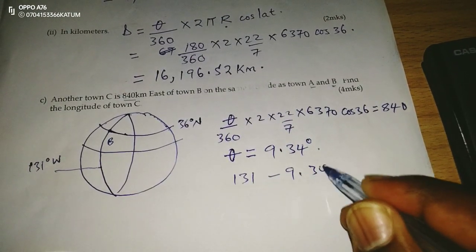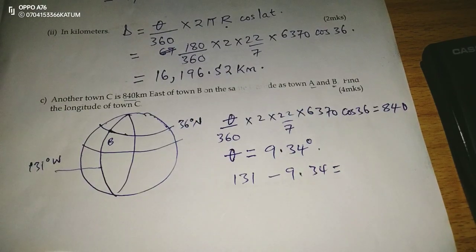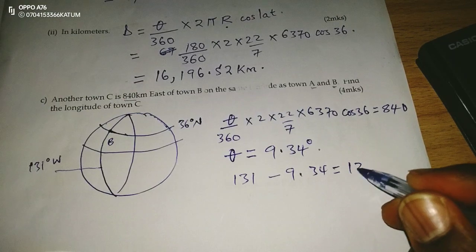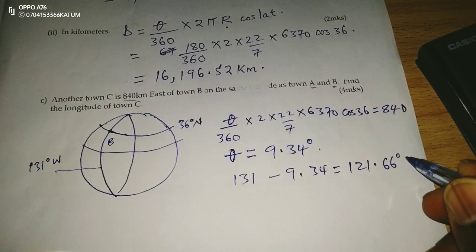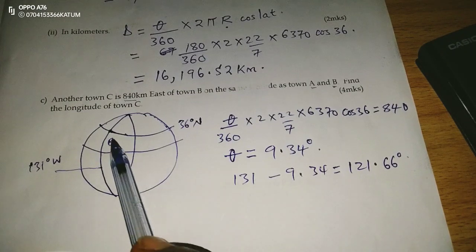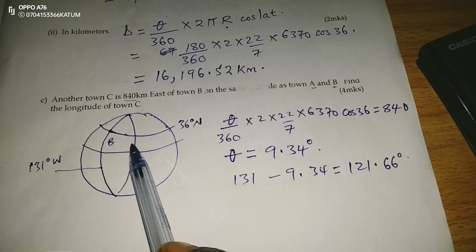we subtract 9.34, this is going to give us 121.66 degrees. But because we have moved through an angle of 9.34 degrees,